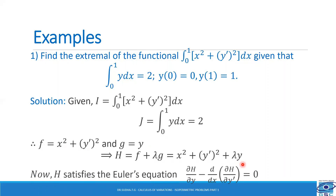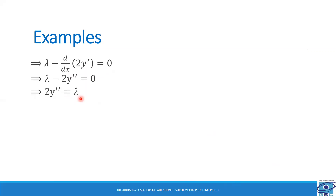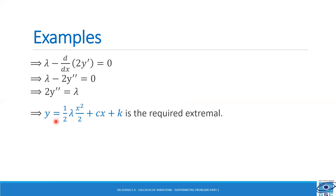For H to be an extremal, it must satisfy Euler's equation: ∂H/∂y − d/dx(∂H/∂y') = 0. Substituting, we get λ − d/dx(2y') = 0, and the derivative of 2y' with respect to x gives 2y'' = 0. Writing the expression as 2y'' = λ, and integrating twice, we get y = (λx²)/4 + cx + k, where c and k are constants of integration. This is the required extremal form.